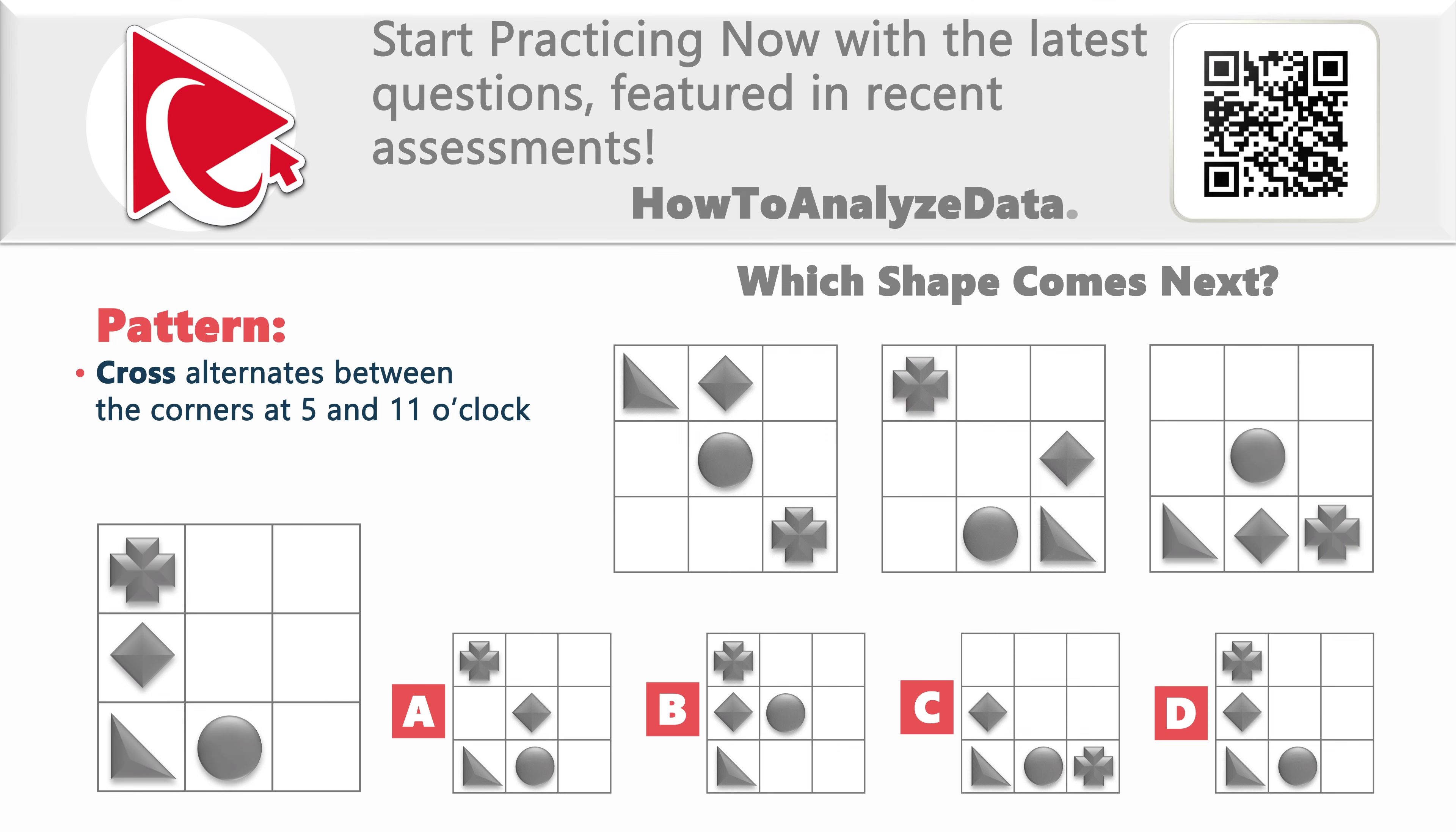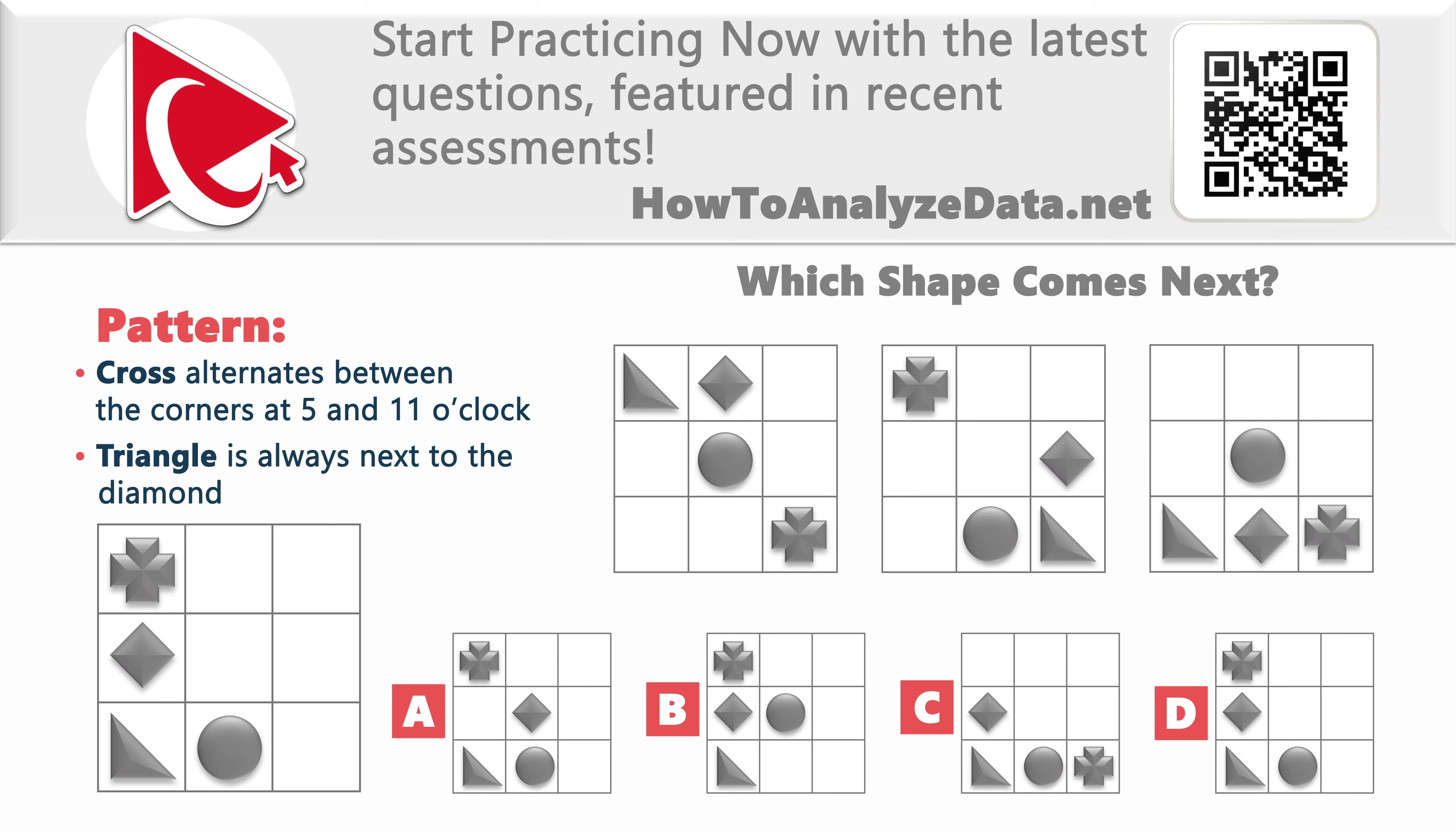Triangle probably has the trickiest pattern. It's always next to the diamond. And if you look closely, it's either at the left of the diamond or at the bottom of the diamond. It is at the left of the diamond at shapes 1 and 3, and it is at the bottom of the diamond at shape 2.